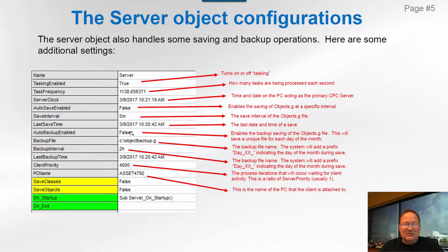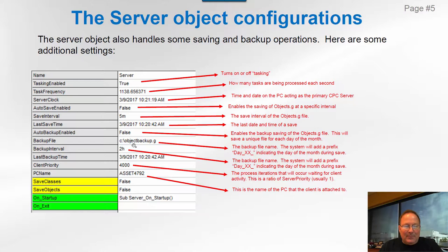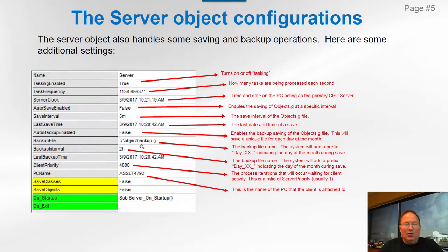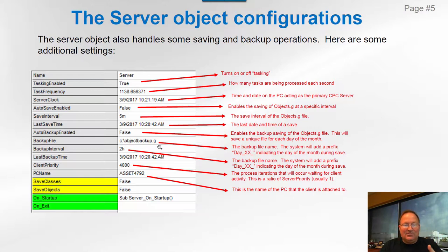Auto backup means that even though we're saving the objects.g file to its main location, we might want to create backup copies. By putting a backup copy file path and a backup interval, you're instructing the system to store a backup copy of the objects. It will create a different version of this file for every day of the month, so you'd typically see about 30 or 31 backup copies in your folder. Each file is named 'day_[day-of-month]_objects_backup.g'.